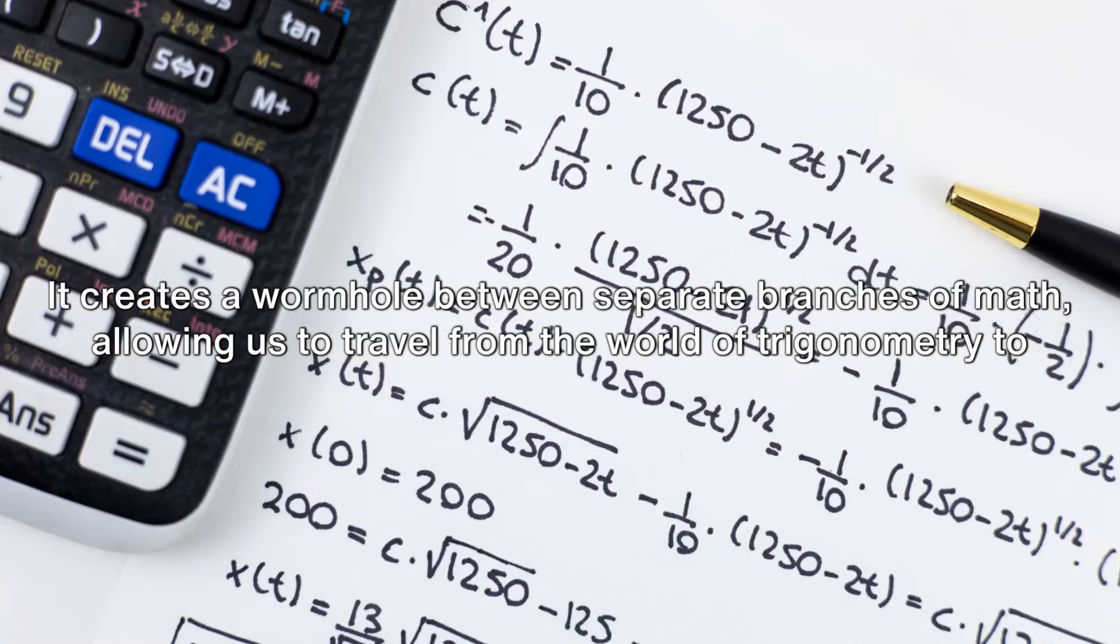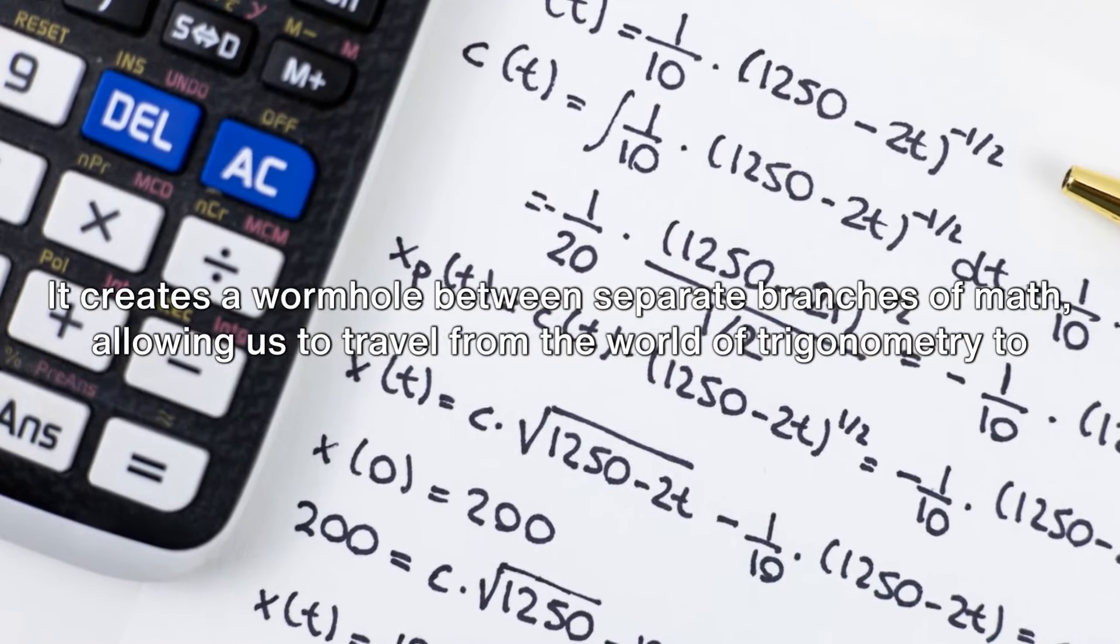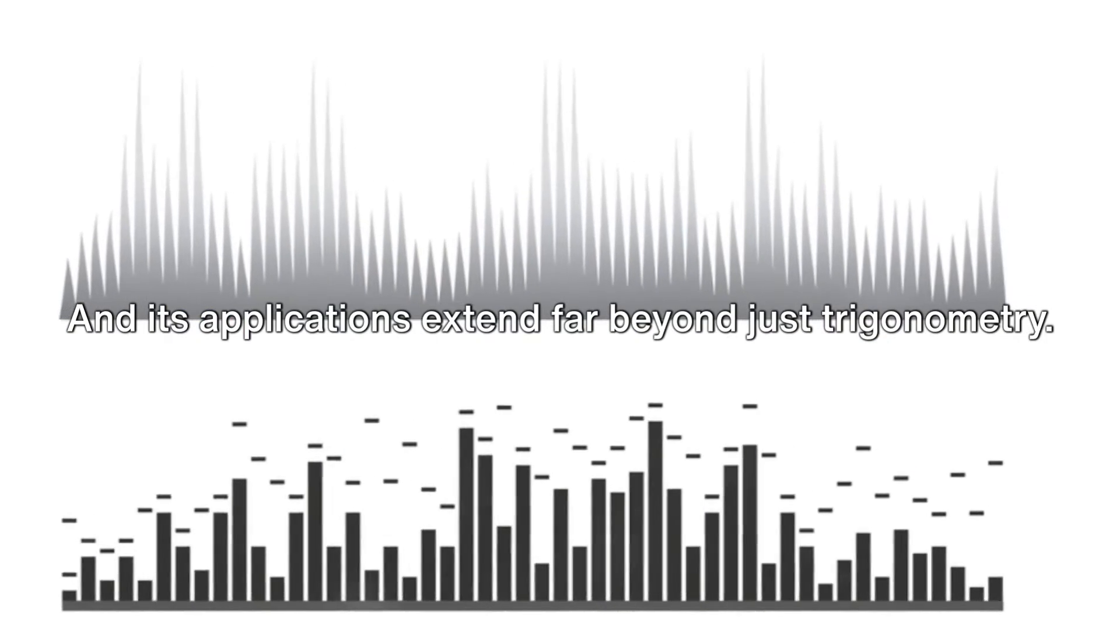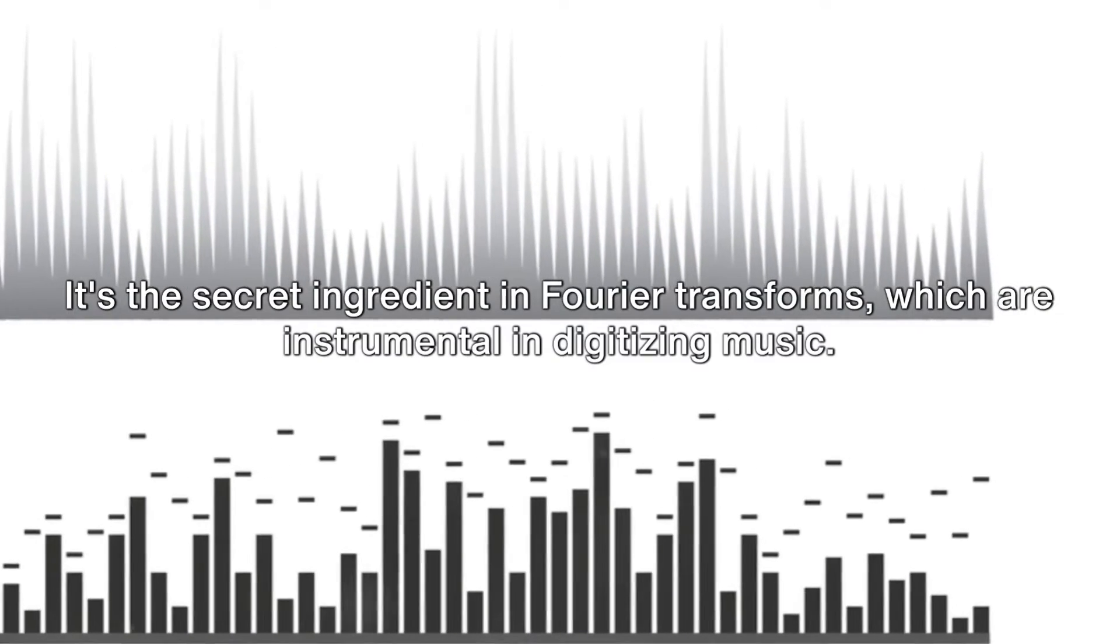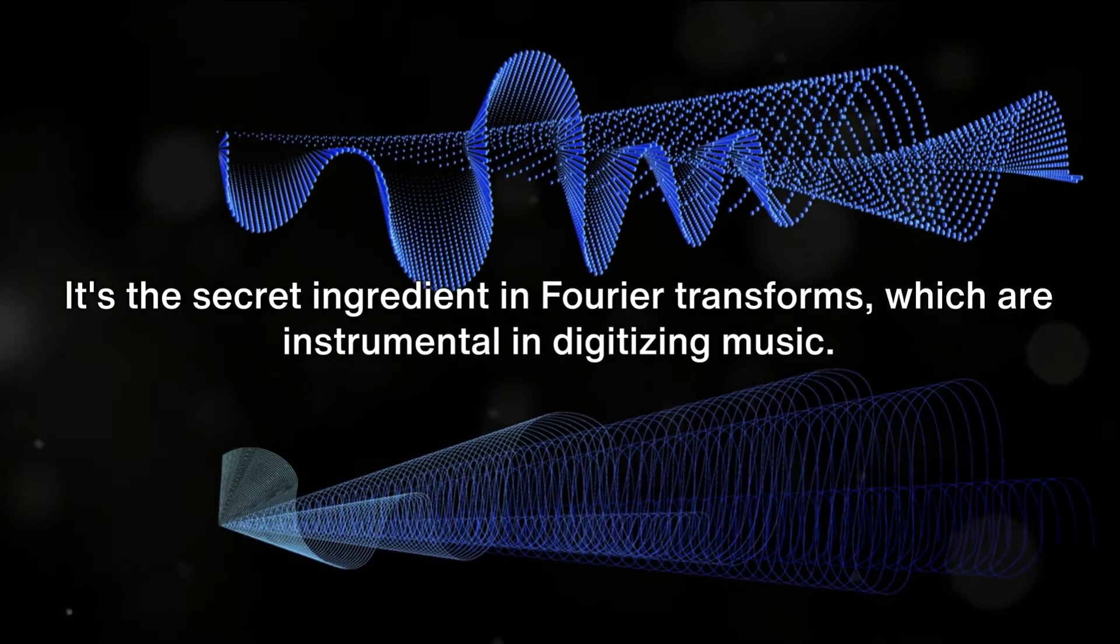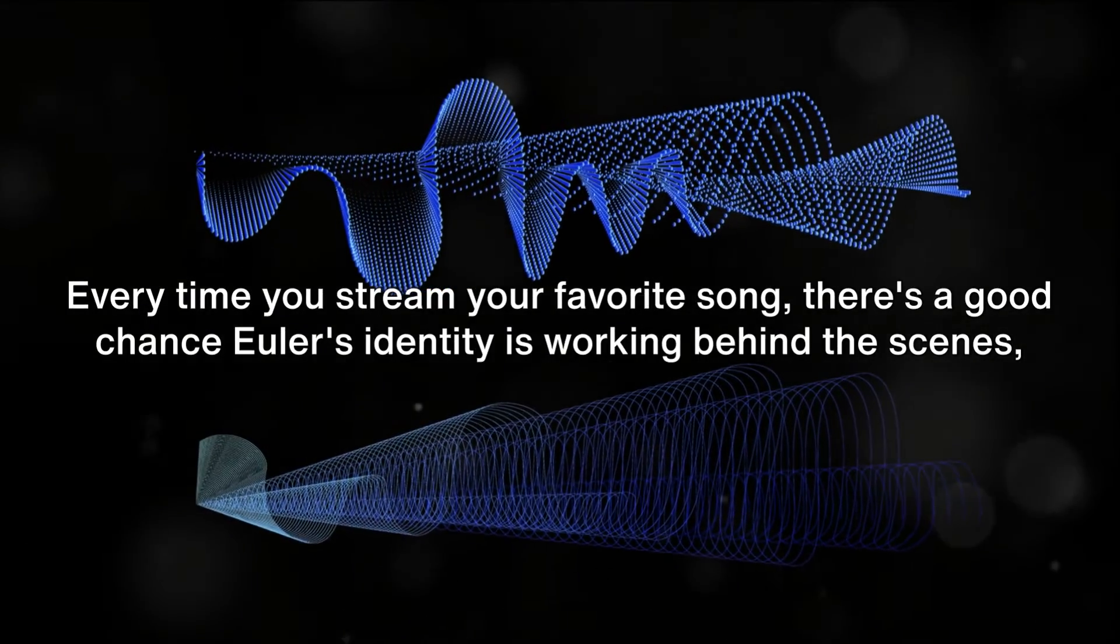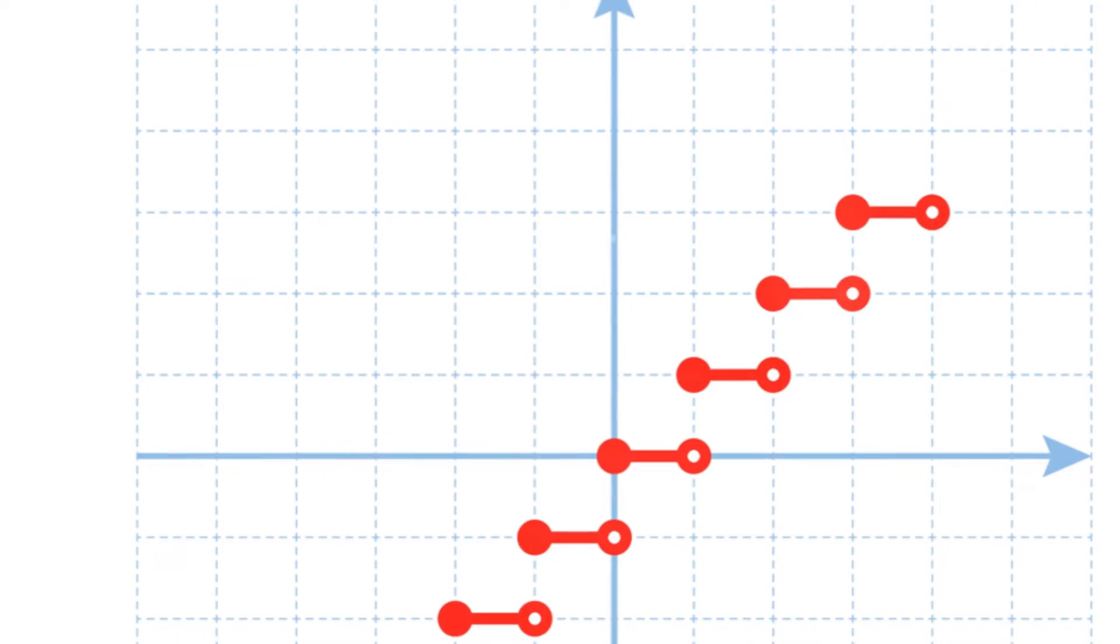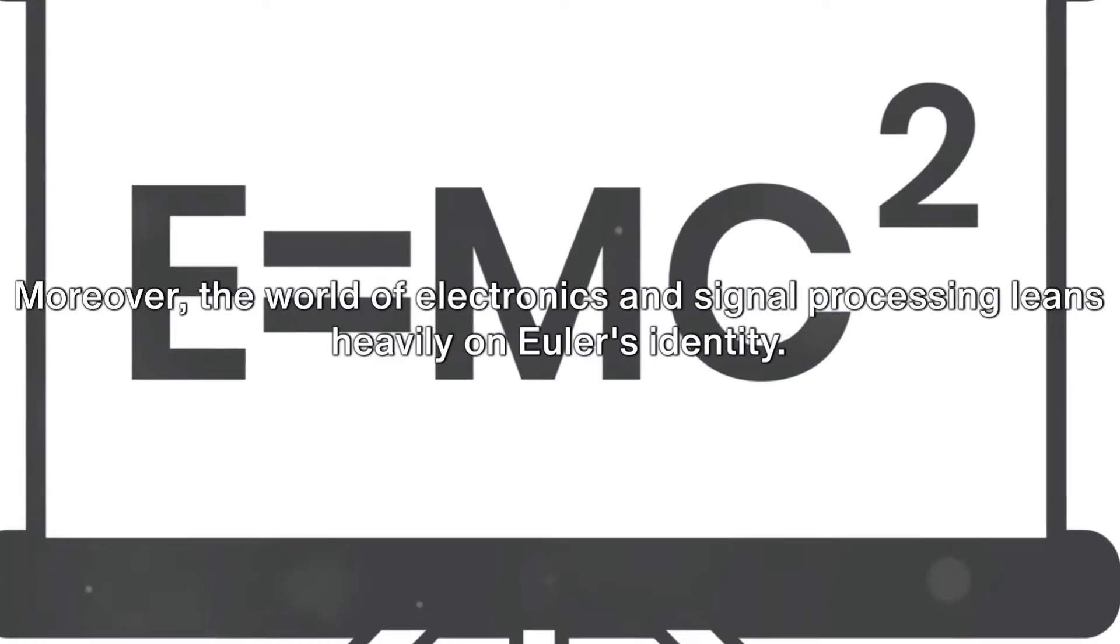It creates a wormhole between separate branches of math, allowing us to travel from the world of trigonometry to algebra with ease. And its applications extend far beyond just trigonometry. It's the secret ingredient in Fourier transforms, which are instrumental in digitizing music. Every time you stream your favorite song, there's a good chance Euler's identity is working behind the scenes, converting the melodious waves into digital signals.